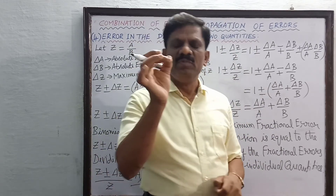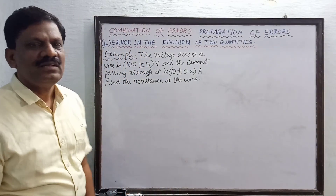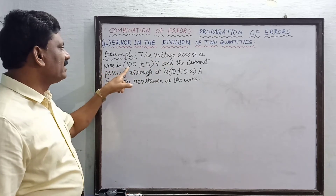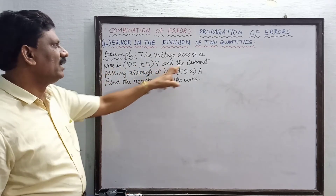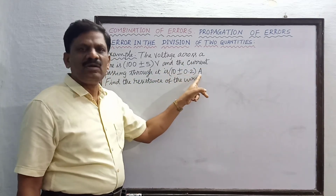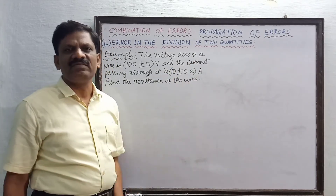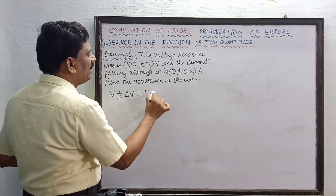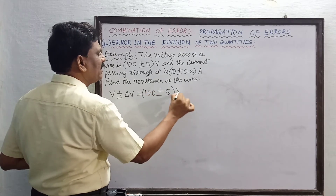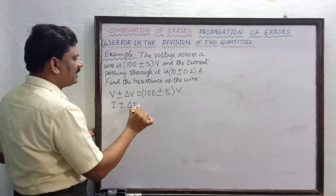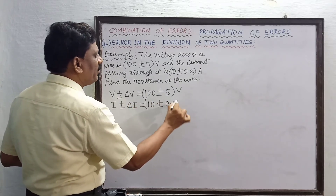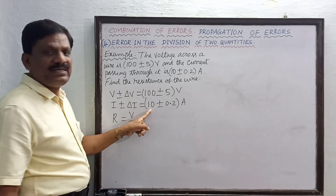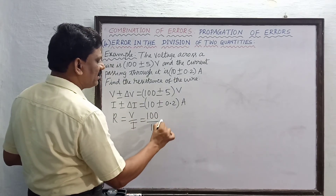Now I am going to explain the error in the division of two quantities with an example. The voltage across a wire is 100 plus or minus 5 volt, and the current passing through it is 10 plus or minus 0.2 ampere. Find the resistance of the wire within the error limits. From Ohm's law, resistance R equals voltage by current, V by I. So V is 100 and I is 10, giving R equal to 10 Ohm.